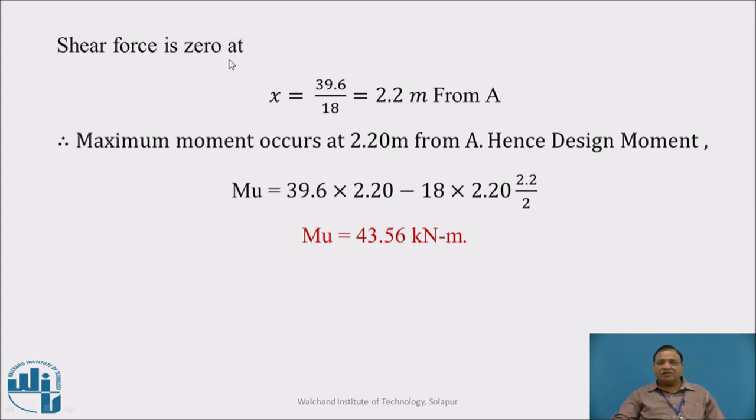Taking moment about B: RA times 4.5 equals 18 times 2.95 times (4.5 minus 2.95 by 2) plus 14.625 times 1.55 times 1.55 by 2. RA equals 39.6 kN. By taking a section at distance x and dividing by loading, we find at 2.2 meter from A we get maximum bending moment. Maximum bending moment MU equals 39.6 times 2.2 minus 18 times 2.2 times 2.2 by 2, which is 43.56 kilonewton meter.